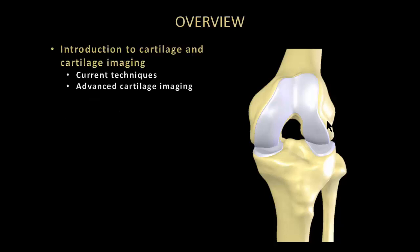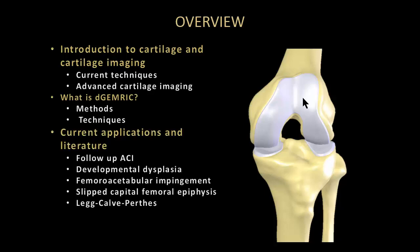To begin, we'll go through some of the normal cartilage anatomy and cartilage imaging techniques. Then we'll get into dGEMRIC — exactly what it is, how it works, the methods, and the techniques. Then we'll get into the literature on dGEMRIC and its current applications, specifically as they pertain to the hip and to follow-up on autologous cartilage implants. Finally, we'll talk about pitfalls and limitations.